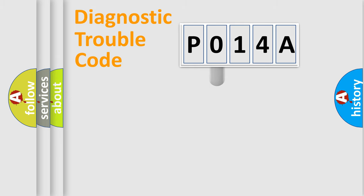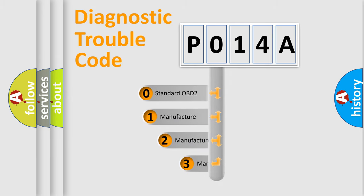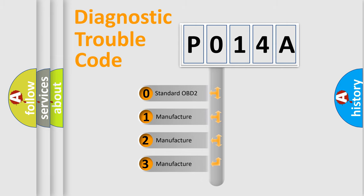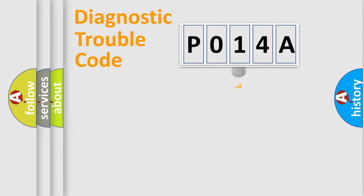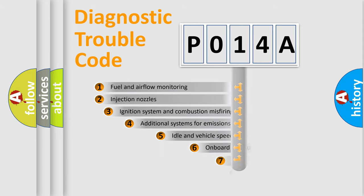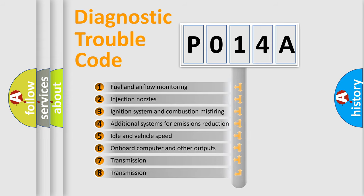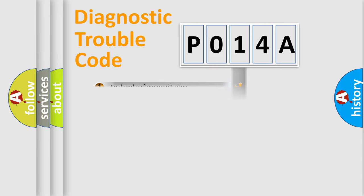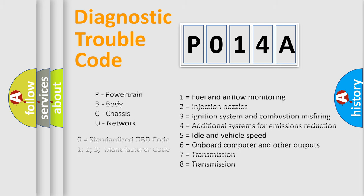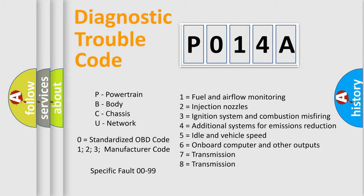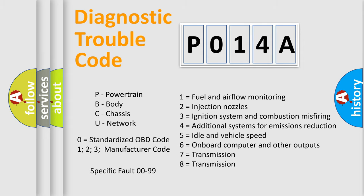This distribution is defined in the first character of the code. If the second character is expressed as zero, it is a standardized error. In the case of numbers 1, 2, or 3, it is a more specific expression of a car-specific error. The third character specifies a subset of errors. The distribution shown is valid only for the standardized DTC code. Only the last two characters define the specific fault of the group.